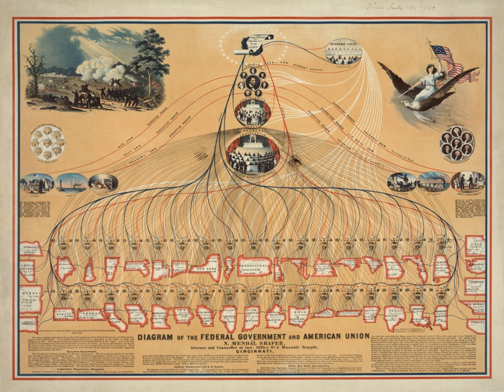The Federal Government of the United States is the National Government of the United States, a federal republic in North America, composed of 50 states, a federal district, five major self-governing territories, and several island possessions. The federal government is composed of three distinct branches — legislative, executive, and judicial — whose powers are vested by the U.S. Constitution in the Congress, the President, and the federal courts, respectively.